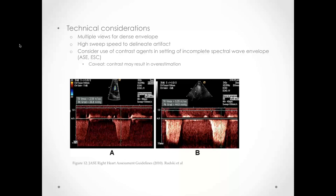There is also the possibility when using contrast of overestimating PASP because you're measuring a fringe artifact. An example from the JASE Right Heart Assessment Guidelines shows the same patient with and without contrast — without contrast, the velocity is measured correctly, but with contrast it is measured at the fringe, significantly overestimating the value. Small differences in velocity get amplified in the modified Bernoulli equation since it uses 4V².